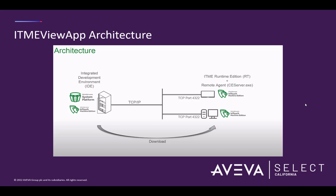The system architecture that is unlocked by the ITME ViewApp object makes it easy to manage remote edge runtime machines. As you can see in the diagram, the ITME ViewApp object communicates with the edge runtime nodes by using TCP/IP. Once the object is properly configured and the initial runtime files and remote agent executable files — which is cserver.exe — are installed on the runtime nodes, you are then able to edit and download the project to the runtime machines all from the System Platform IDE. In a lot of ways, this works like the remote management tool inside of Edge, except that the management is performed from System Platform instead.